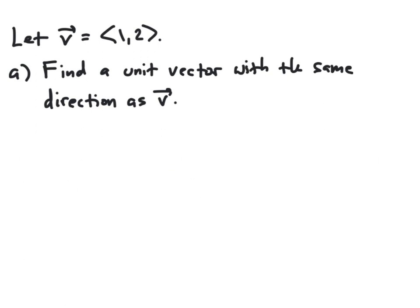First, we'll find a unit vector with the same direction as vector v. In order to find a unit vector in the same direction as a vector, what we need to do is first find the magnitude of the given vector, and then scale the given vector by 1 over that magnitude, therefore forming a unit vector which has the same direction.